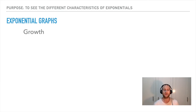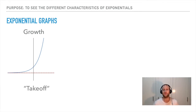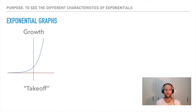There are two types of exponential graphs: growth and decay. Growth looks like a takeoff — imagine a plane taking off. This shape occurs when c is greater than one. The graph rises steeply from left to right.